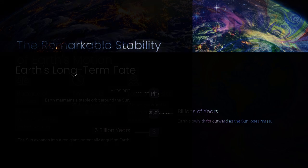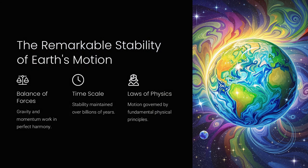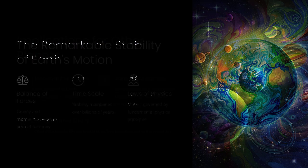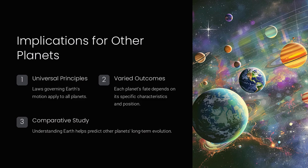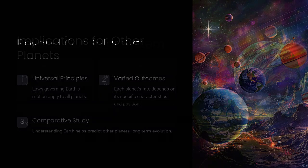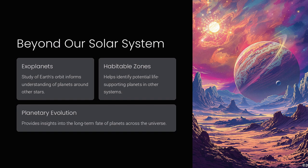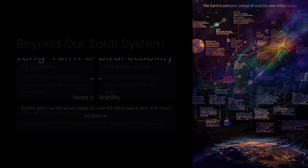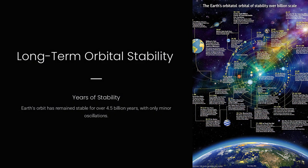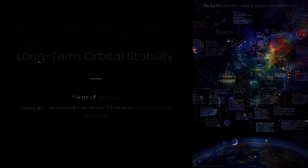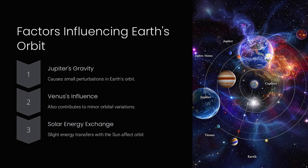Earth's motion is governed by gravity and momentum, working in a delicate balance. The sun's gravity constantly pulls Earth inward, while Earth's forward motion prevents it from falling in, keeping it locked in orbit. This is the same reason why satellites orbit planets and why the Moon orbits Earth. It's all about the perfect balance of forces.